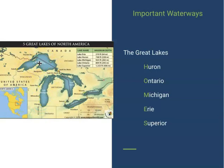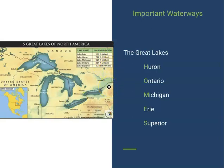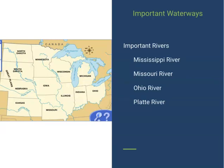If you look here, it gives you the maximum depth of each lake. Lake Erie is the most shallow of the five Great Lakes, and Lake Superior is the deepest. The deepest point of Superior is 1,333 feet, which is super deep. Lake Erie is only 210 feet deep, so you can see they have very different depths.